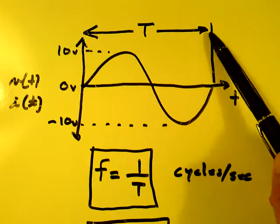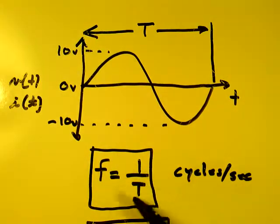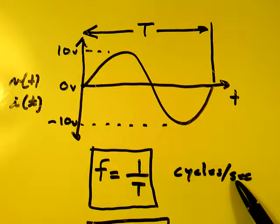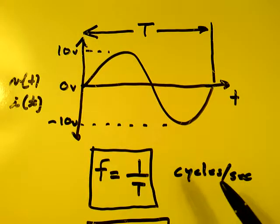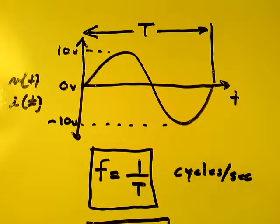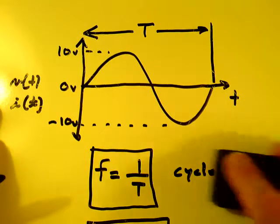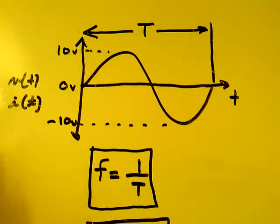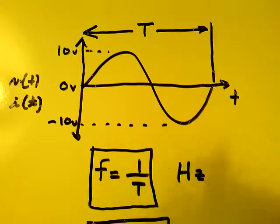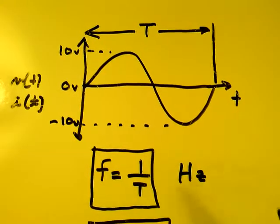So this period is in seconds. So if you take the inverse of the period, you'll get the frequency in cycles per second. Now, back in 1968, the Institute for Electrical and Electronic Engineers, IEEE, they decided they're not going to represent frequency in cycles per second. The units are not going to be cycles per second anymore. So you'll never hear that. You'll hear hertz. Hertz is cycles per second. So frequency is one over the period in hertz.